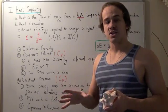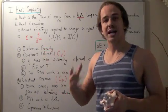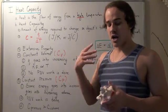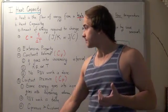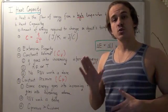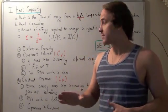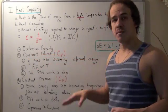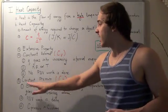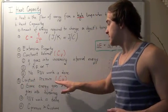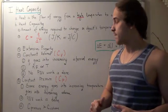Intensive properties are those properties such as temperature that do not change when there's a change in size. There are two types of heat capacities: constant volume heat capacities, or C-sub-v, and constant pressure heat capacities, or C-sub-p.